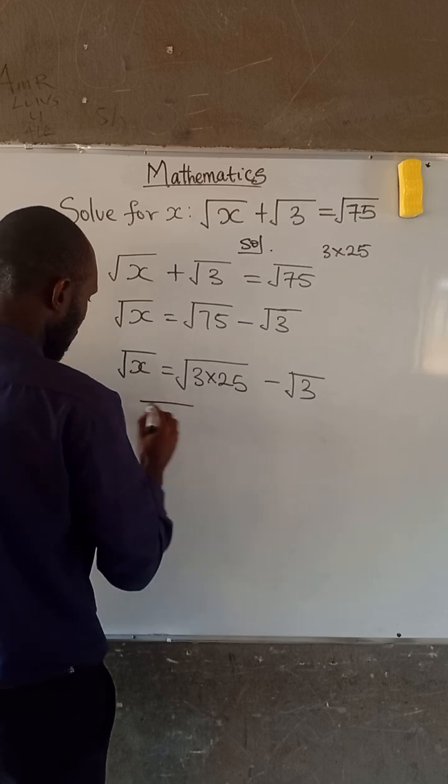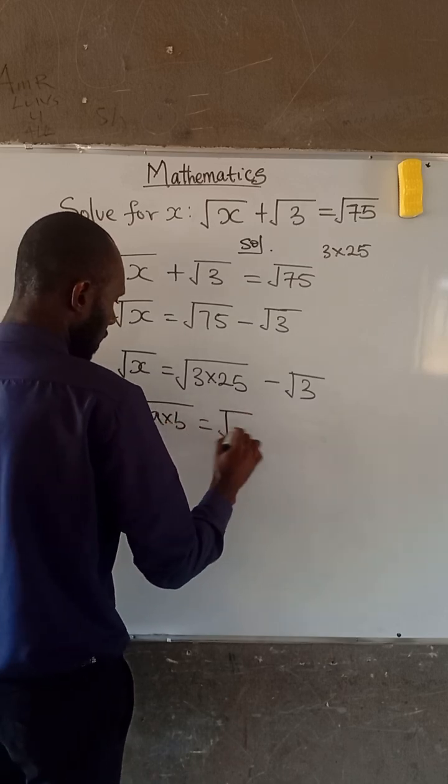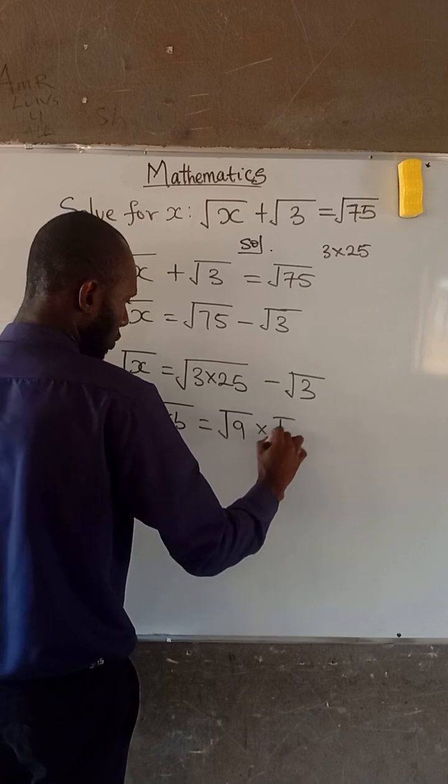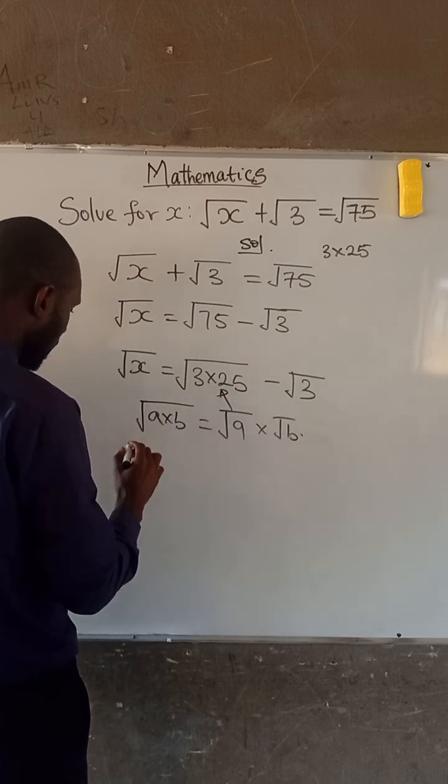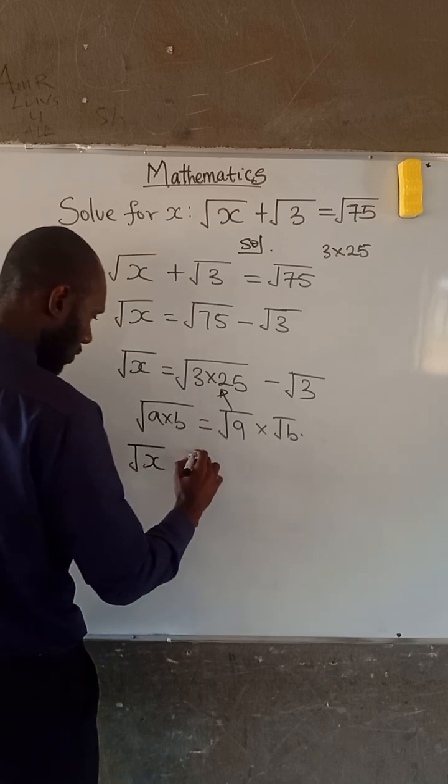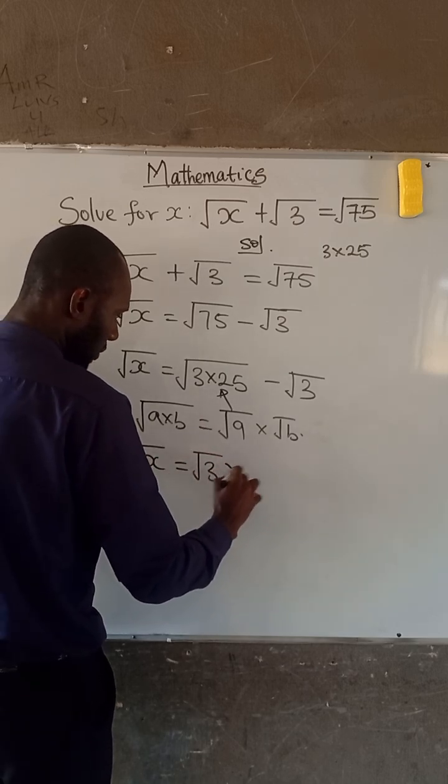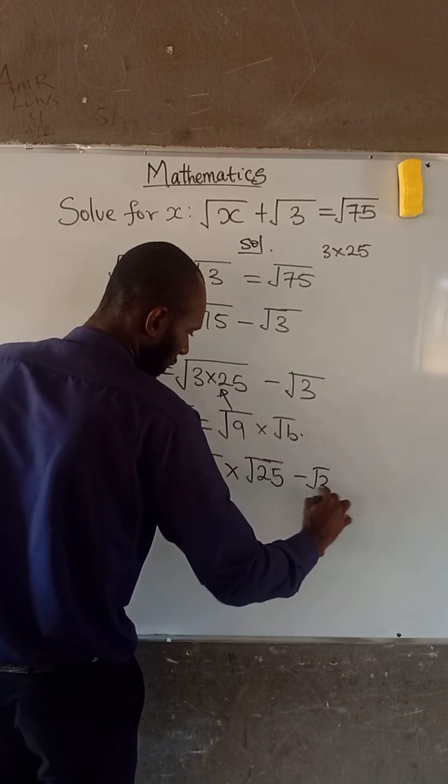But we know that root of a times b can be expressed as root a times root b. So we apply this at this point. So we have that this is root x equal to root 3 times root 25 minus root 3.